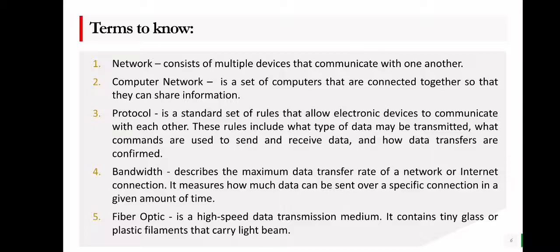Next is bandwidth. Bandwidth describes the maximum data transfer rate of a network or internet connection. It measures how much data can be sent over a specific connection in a given amount of time — for example, 100 megabits per second. You can see this when you run an application like speedtest.net to check the speed of your internet; it can also show you the bandwidth of your network.